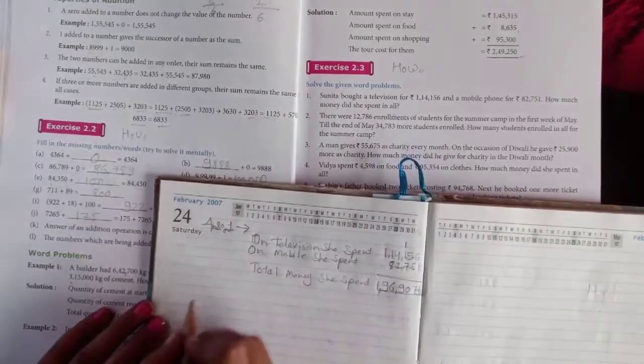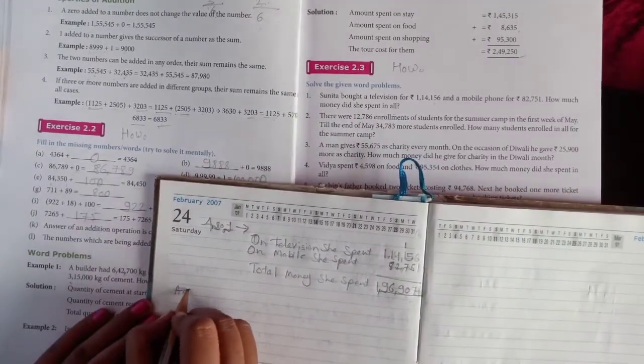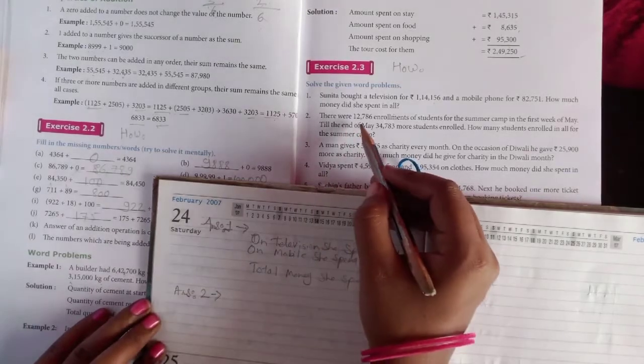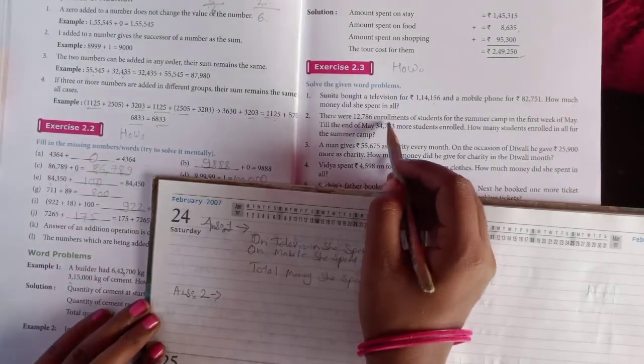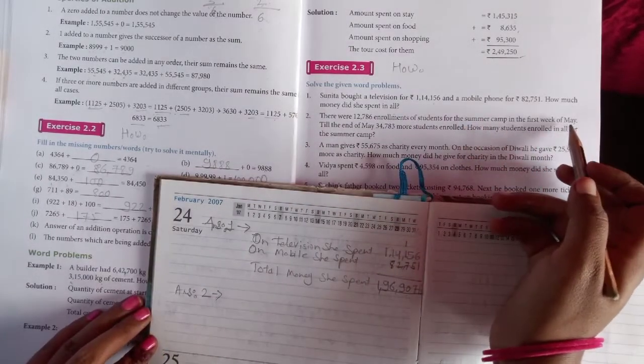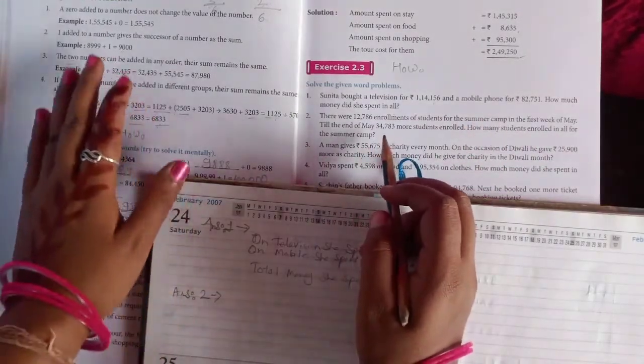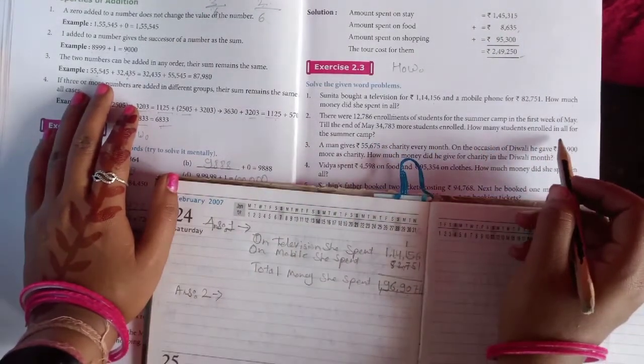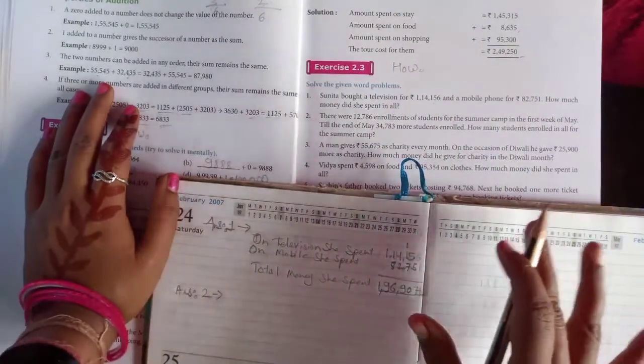Second one: There were 12,786 enrollments of students for the summer camp in the first week of May. Till the end of May, 34,783 more students enrolled. How many students enrolled in all for the summer camp?